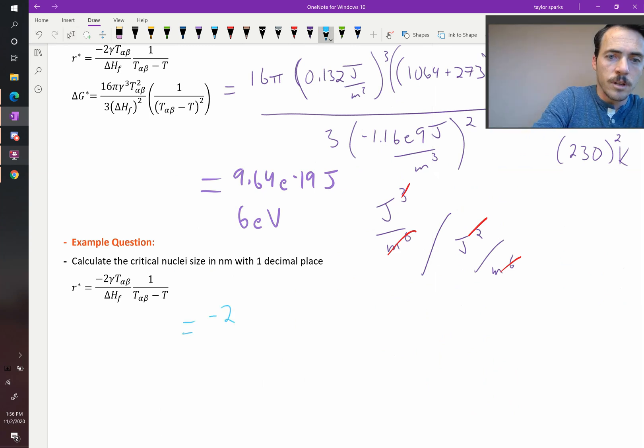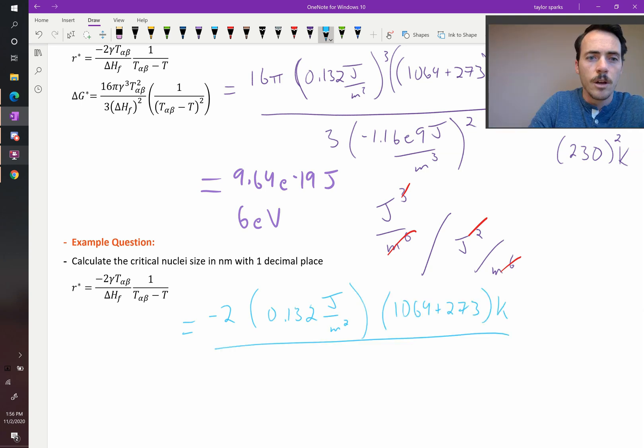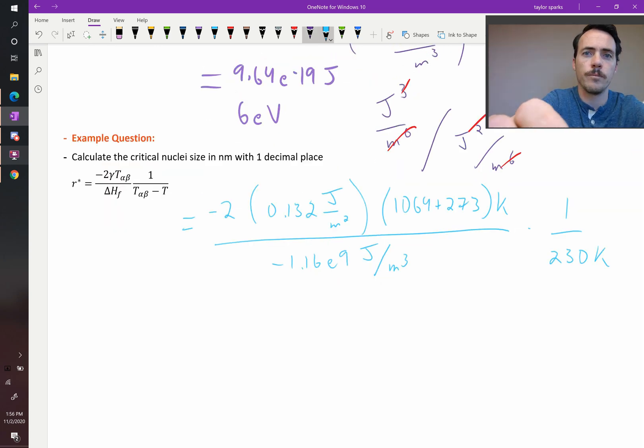Negative 2 times our surface energy, multiply by the temperature at which this is expected to take place, divide that by the enthalpy of fusion, and then multiply this by 1 over the amount of supercooling. Doing a quick unit analysis, what do we find? We're going to have joules per meter squared times temperature divided by temperature, divided by joules per meter cubed. So if we plug everything in, we're going to get a number in meters.